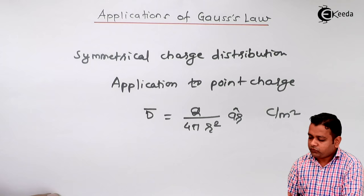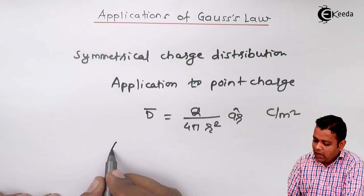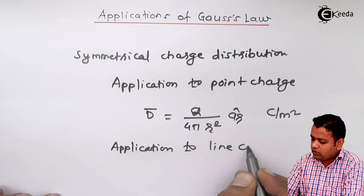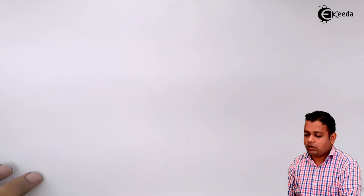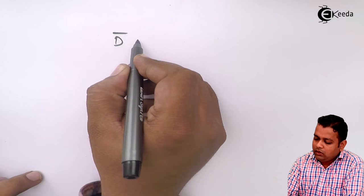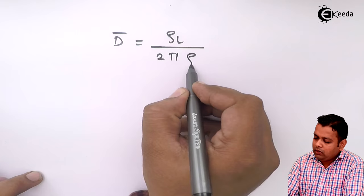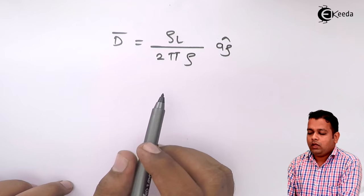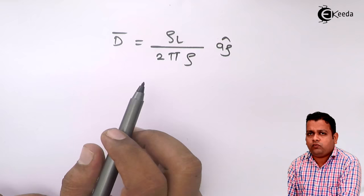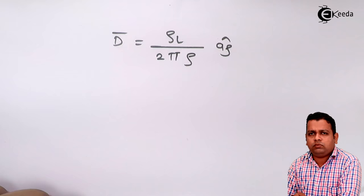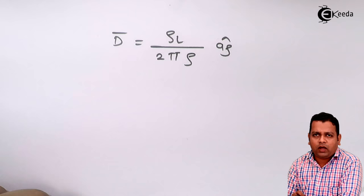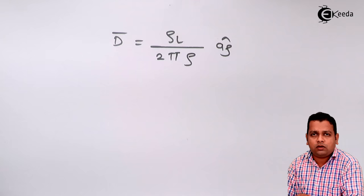If the application of Gauss's law is done to a line charge: if the line charge is a uniform configuration that is infinitely long, then D̄ equals ρl over 2πρ â_ρ. Here ρl is the line charge density, and if we have a limiting value of line charge density, Gauss's law can be applied to this configuration. The extent of the closed surface has to be taken into consideration for whether the line is infinite or finite.